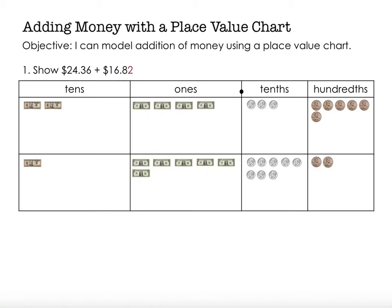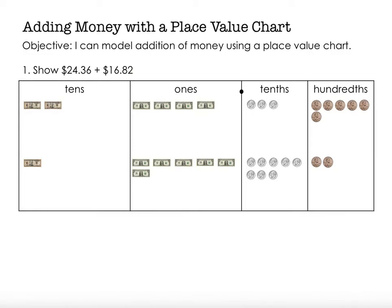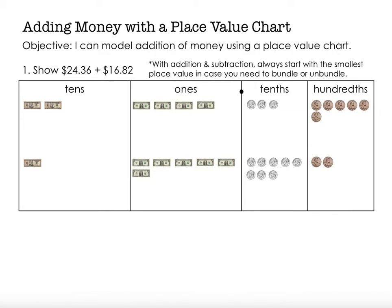Now, since I'm adding, I'm just going to combine these. I'm going to take away all those lines so I can look just at the money values and combine those. When I add or subtract numbers, I always start with the smallest place value. In this case, the smallest place value is the hundredths place — that's my place value furthest to the right. So I'm going to count up how many hundredths I have. I have my six pennies here plus two more, so that's eight hundredths, eight pennies.